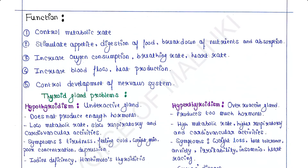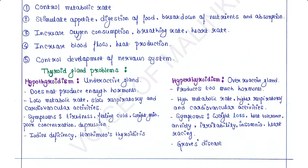Now we will talk about the functions of the thyroid gland. They control the body's metabolic rate. They stimulate appetite, digestion of food, breakdown of nutrients and their absorption. They also increase oxygen consumption, breathing rate, and heart rate.